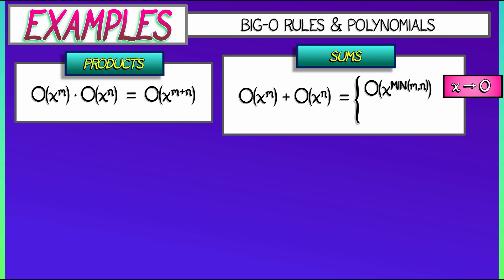Whereas, if we work in the limit as x goes to infinity, we get the maximum between m and n. Now, wait. Is this confusing? No. We've seen this before. When you're in the limit as x goes to zero, it's the lowest order terms that matter. But when you're in the limit as x goes to infinity, it's the highest order terms that matter. This is the same pattern we've seen when doing limits.